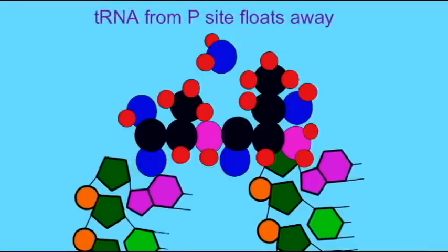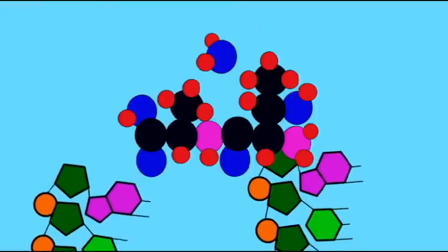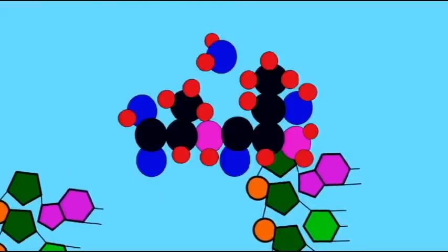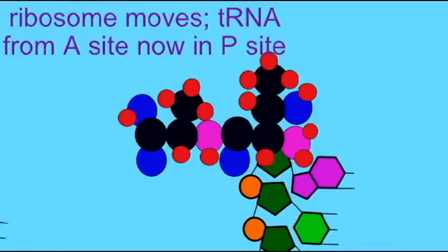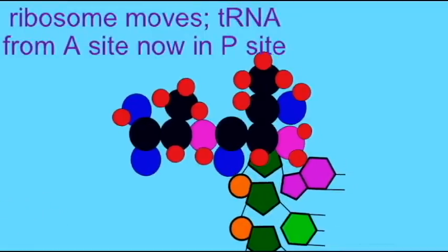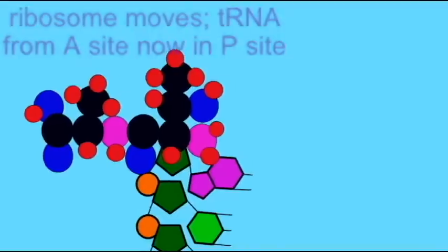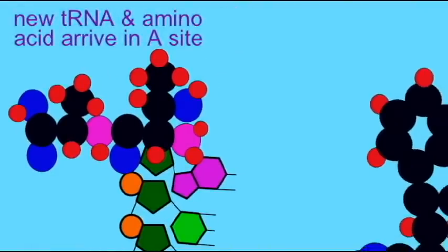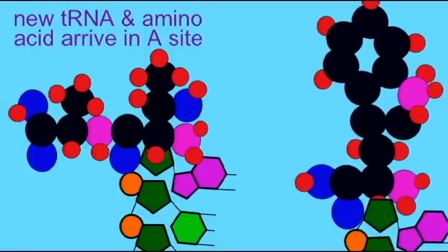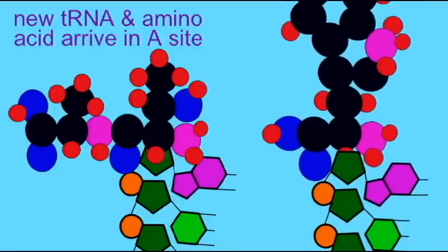The tRNA that is in the A site now has two amino acids attached to it. The ribosome moves so that the tRNA which was in the A site is now in the P site, and now a new tRNA carrying a third amino acid can enter the A site and this process can begin again.